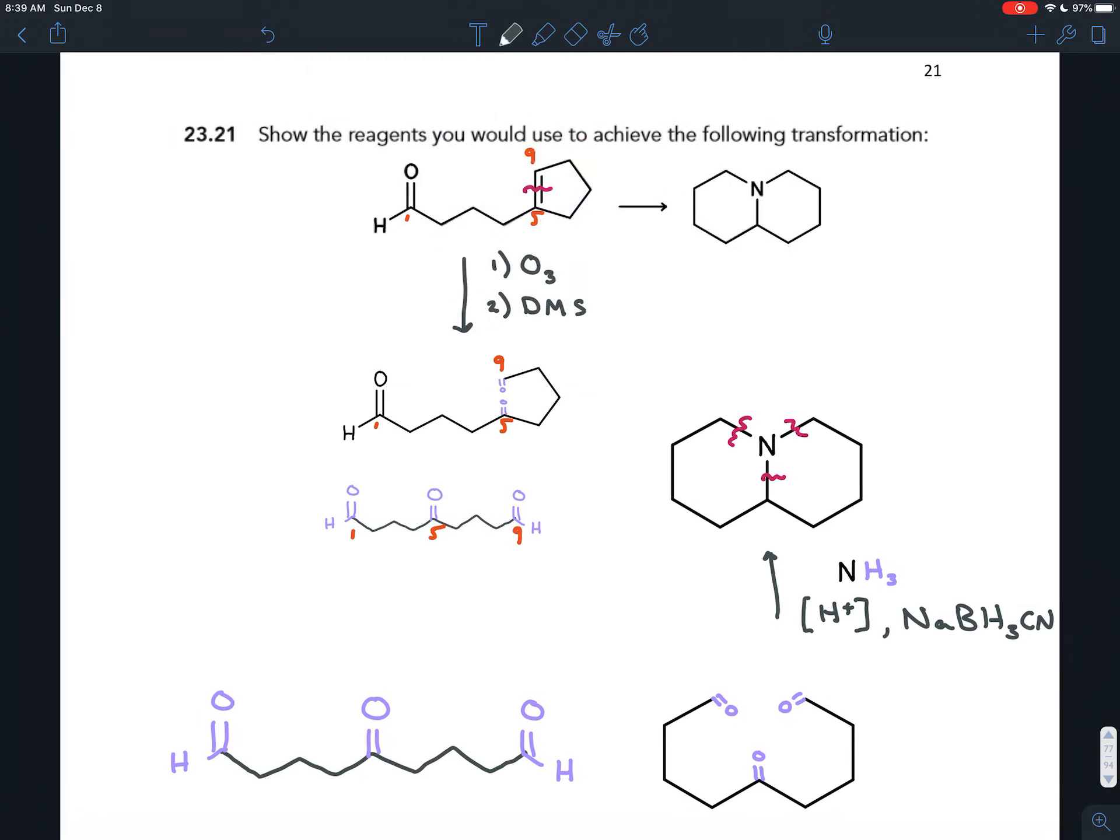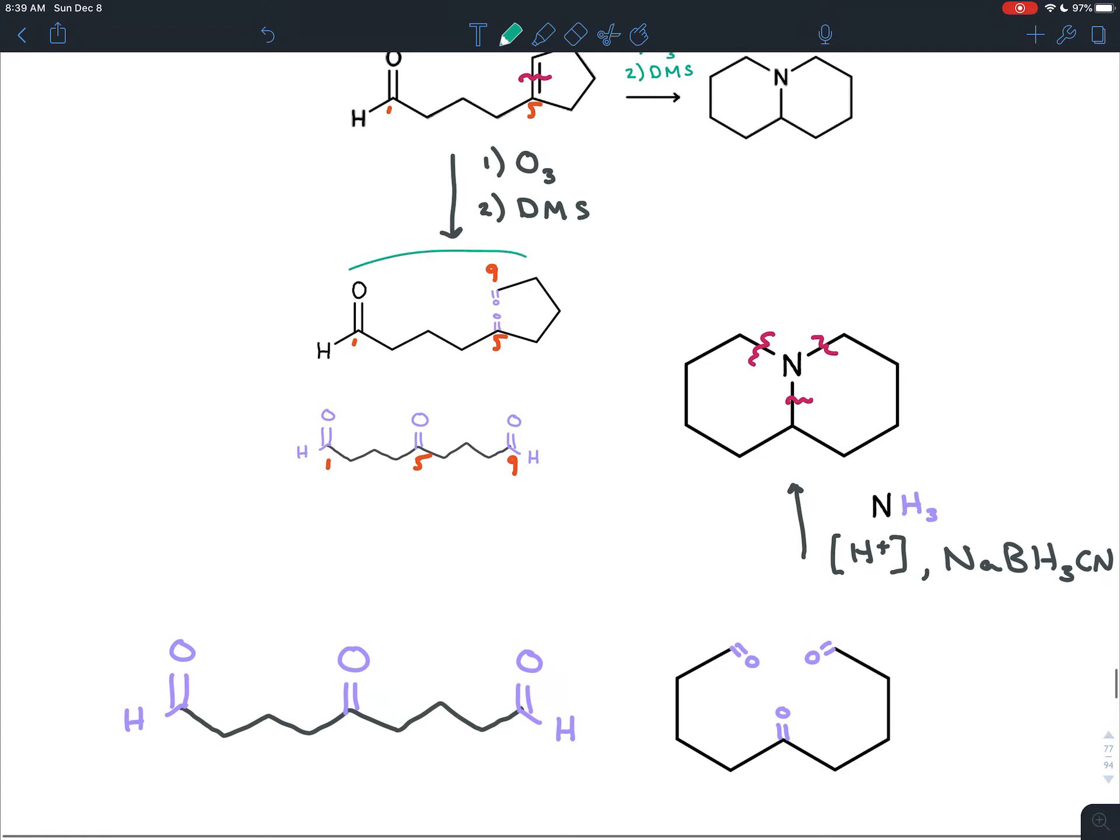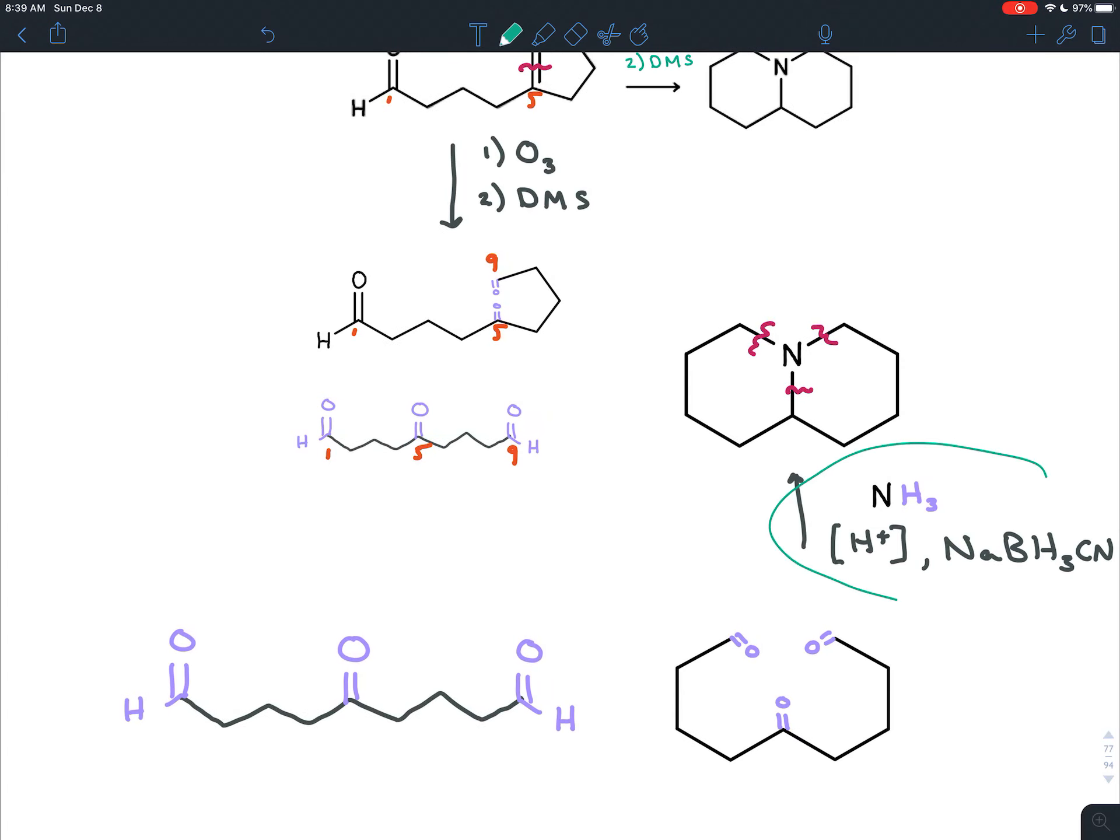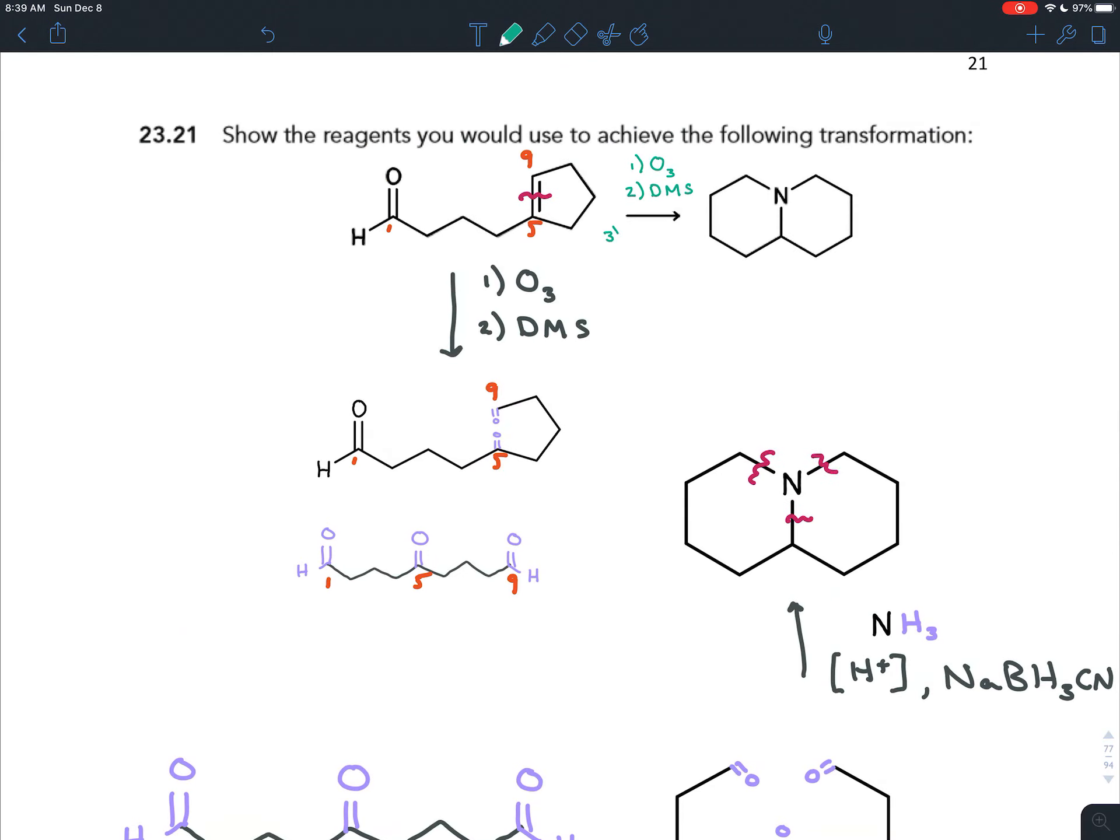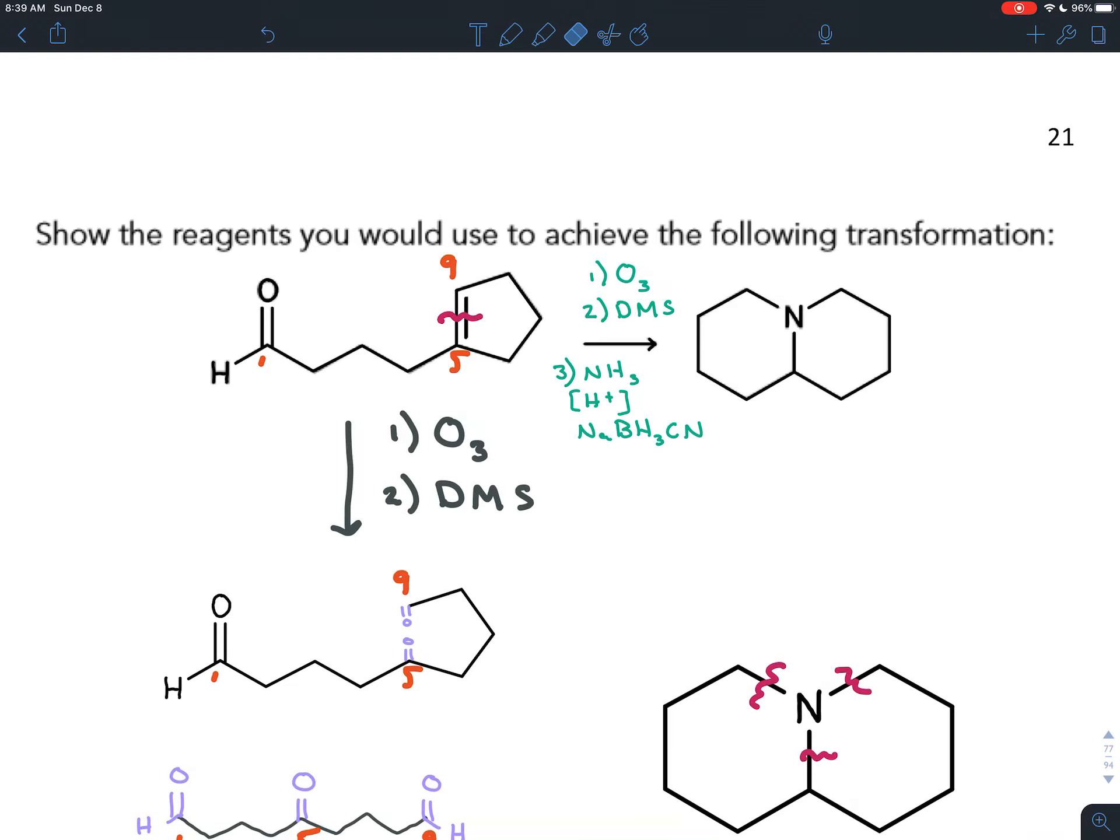The first step is to add ozone. And then, as part of the ozonolysis, in a separate step, you'd add dimethyl sulfide. That would give you this here, which is the same thing as this here. Once you have that, we can add ammonia, an acid catalyst, and sodium cyanoborohydride, and that will undergo a reductive amination to give us our final product. So that third step would be adding ammonia, an acid catalyst, and sodium cyanoborohydride.